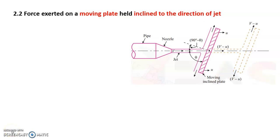Hello everyone. In this short segment we'll try to understand two more cases of moving plates or vanes under the concept of impact of jet. Now it's time to understand the force exerted on a moving plate held inclined to the direction of the jet. In the earlier case we discussed force exerted on a moving plate normal to the jet axis, where Fx was rho times a times (v minus u) squared, with u as the plate velocity and v as the absolute jet velocity.